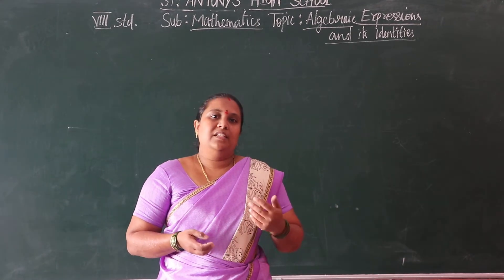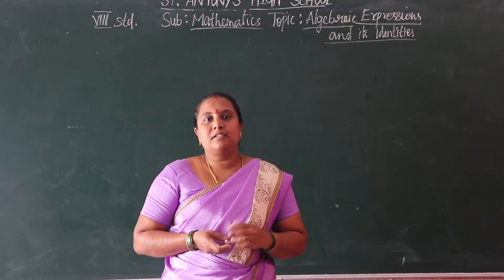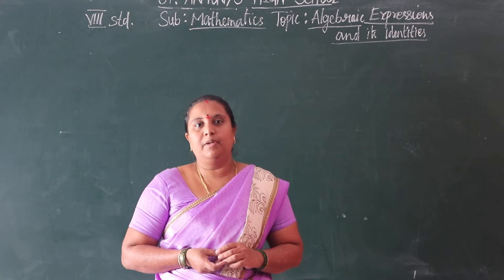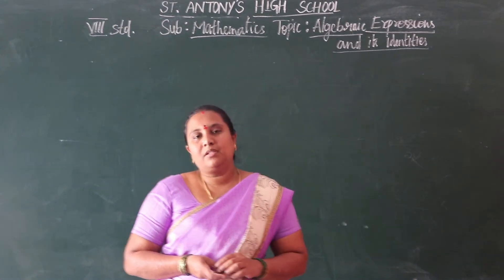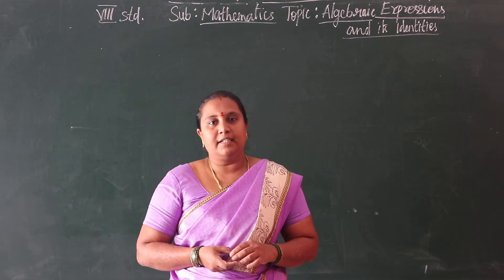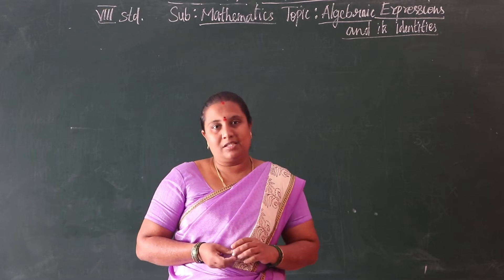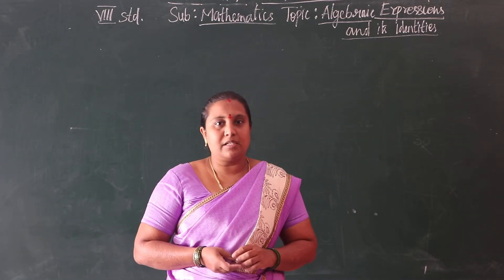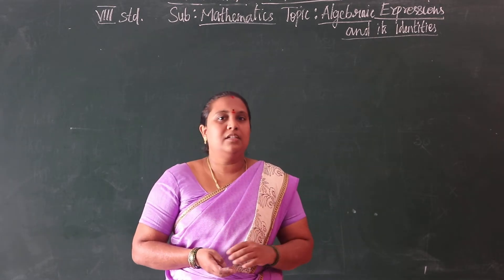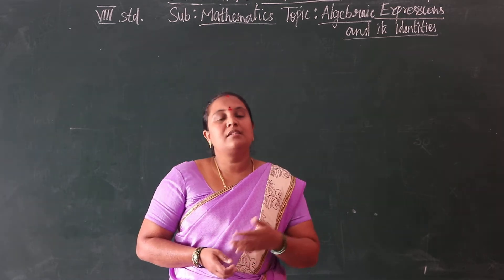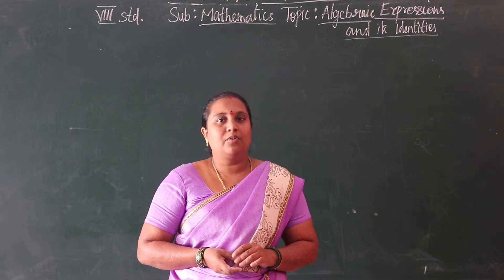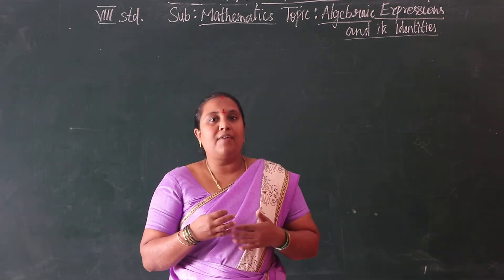Hello children. In our last class we covered algebra, that is linear equations in one variable. Now in this class let us see a new chapter: algebraic expressions and its identities. Before this, we have one chapter that is quadrilateral, which we will see later after completion of this chapter. We are doing this now because it is a continuation of the algebraic chapter, and it is easy to understand.